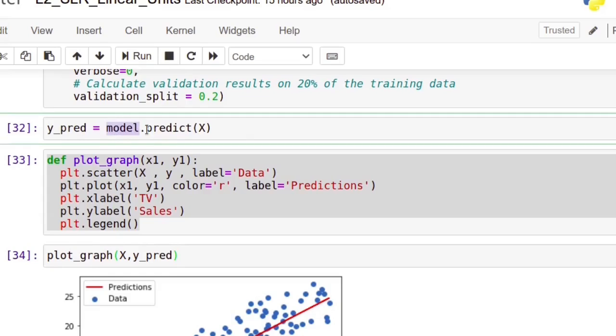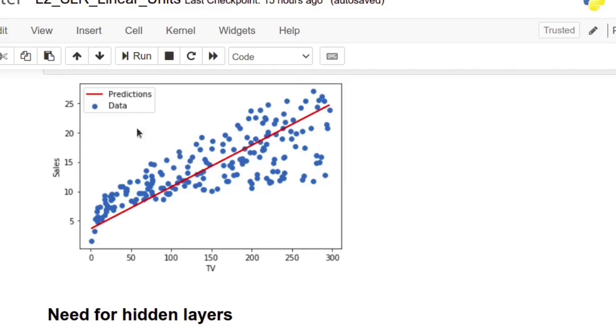Now we can use our model to predict the data. Let us predict the Y values using this trained model. Again, here I am giving all the data within the independent variable X. For this X values, model will predict some Y values. Let us call that as Y predicted. If we plot the original data and predicted data, these blue dots are the original data and this red line is the predicted data.